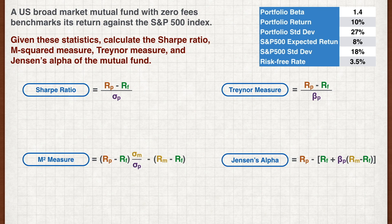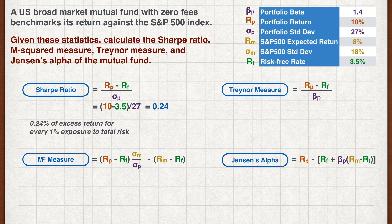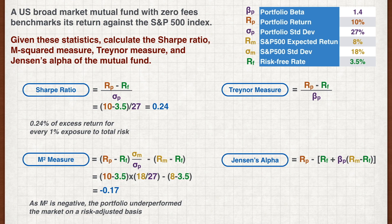Let's first label the various figures we need. The four measures are calculated by plugging in the figures. We get a Sharpe Ratio of 0.24, meaning we get 0.24% of excess return for every 1% exposure to total risk. The M-Squared measure is minus 0.17 — as this is negative, the portfolio actually underperformed the market on a risk-adjusted basis.